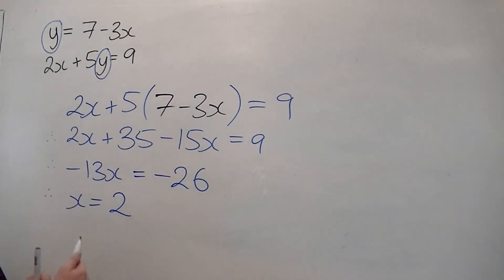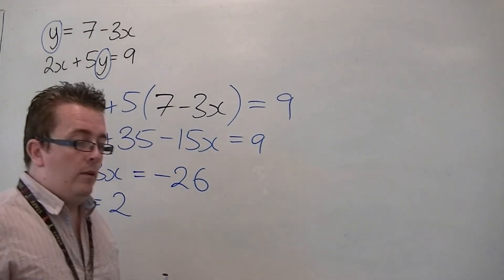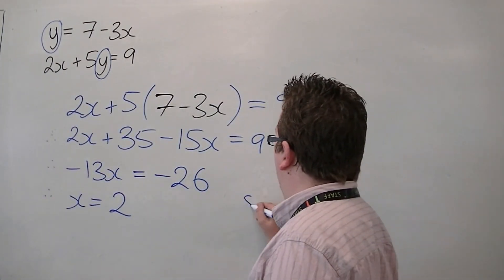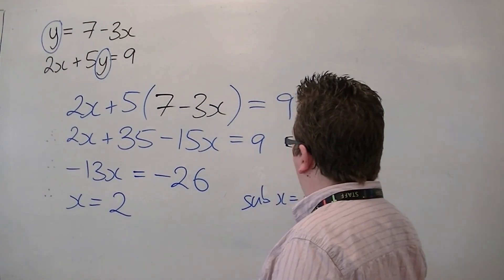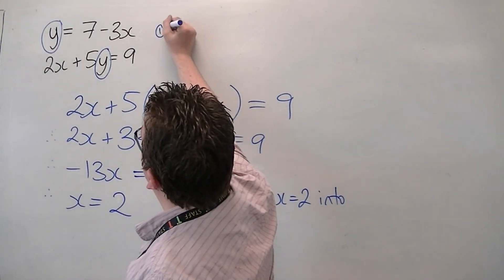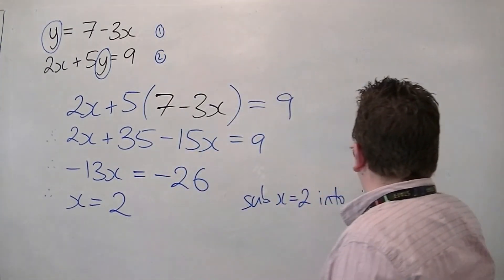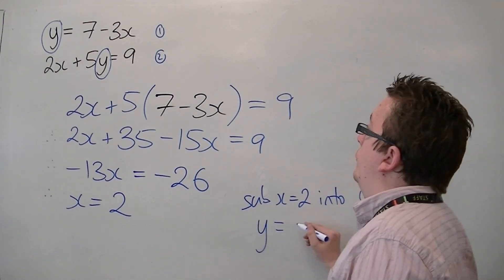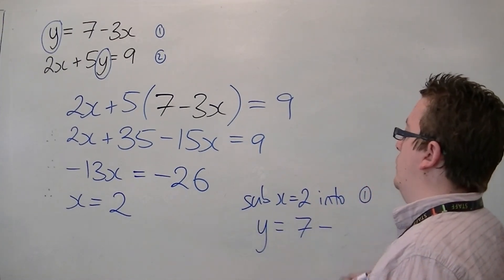So with x equals 2 sorted out, all I now need to do is substitute x equals 2 into the first equation. So if I number the equations, I'll substitute x into number 1, and I get y equals 7 take away 3 lots of 2, so y is equal to 1.